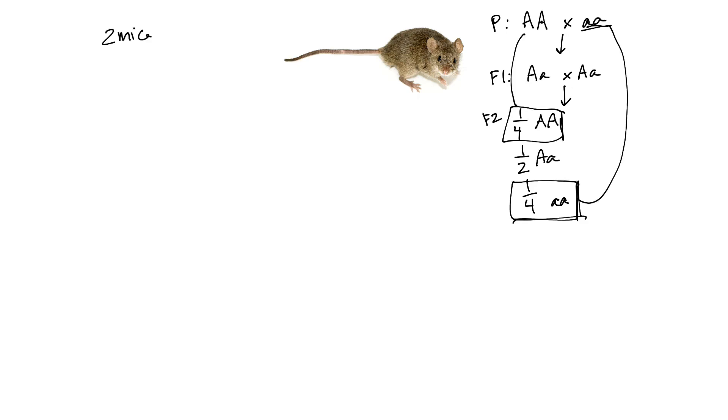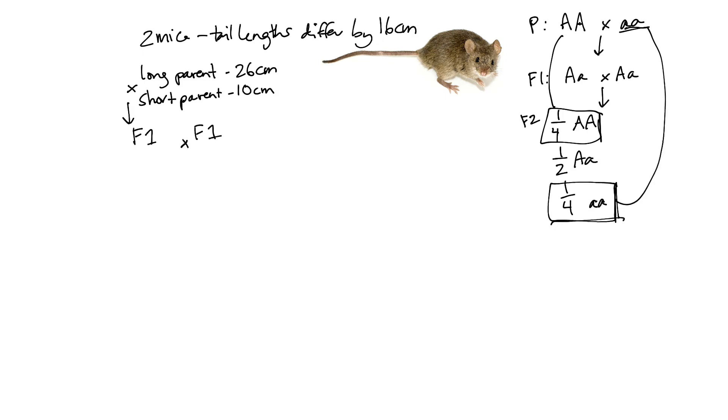So now let's think about our mouse example. We're going to take two mice whose tail lengths differ by 16 centimeters. Okay, so we've got the long parent, let's say their tail length is 26 centimeters in length, and the short parent, their tail length is 10 centimeters in length. Okay, we're going to cross these guys together and get an F1. And then in the F2, we're going to look at the phenotypes. So in the F2, we have 500 mice, two individuals have a 10 centimeter tail, two individuals have a 26 centimeter tail, and 496 individuals have somewhere in between.